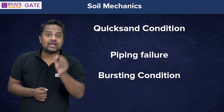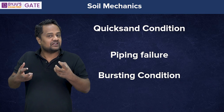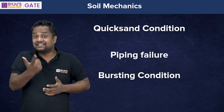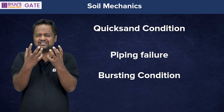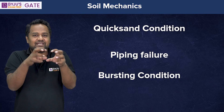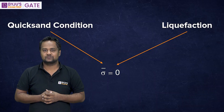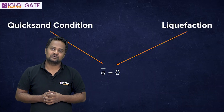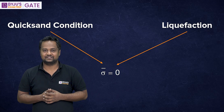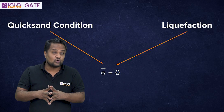Why is it called quicksand and not quick clay? Because in clay, even after there is no contact force between particles, there is still the attraction of cohesion — there is still some bond. Clay can still take some load because there is still some bonding strength, so we do not call it quicksand condition. Effective stress is zero, but cohesion still provides strength in clay.